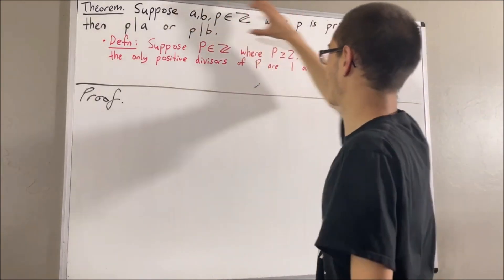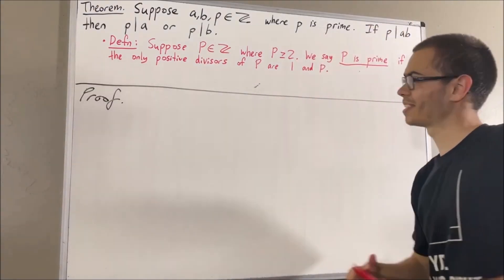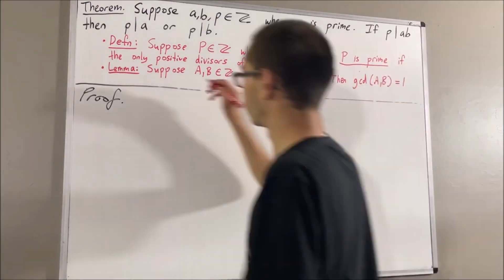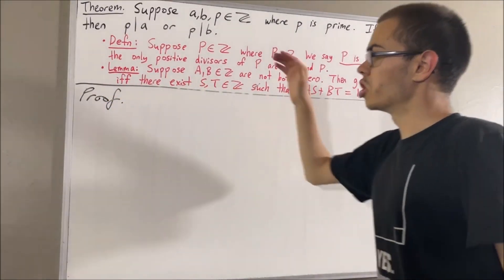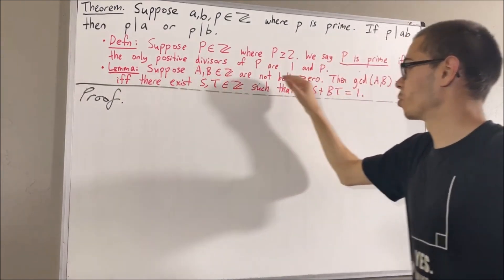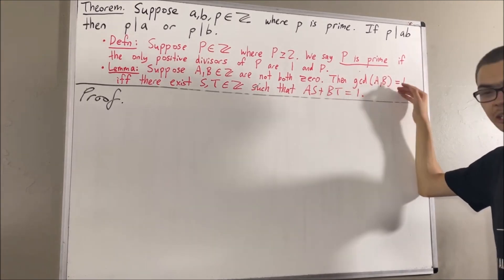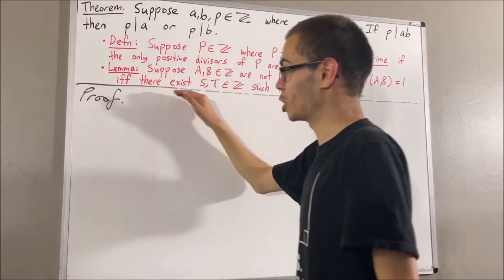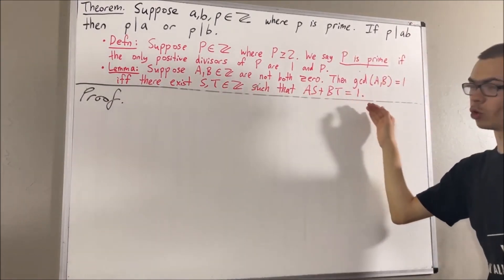In proving this theorem, we are going to use the following preliminary result. Suppose a and b are integers that are not both 0. Then the greatest common divisor of a and b is equal to 1 if and only if there exist integers s and t such that as plus bt is equal to 1.